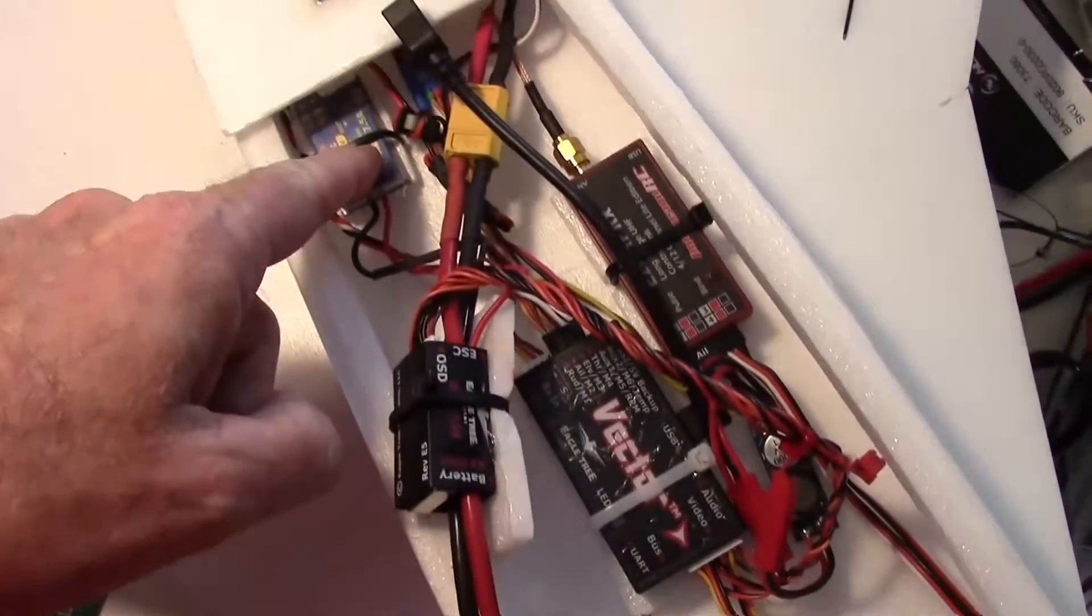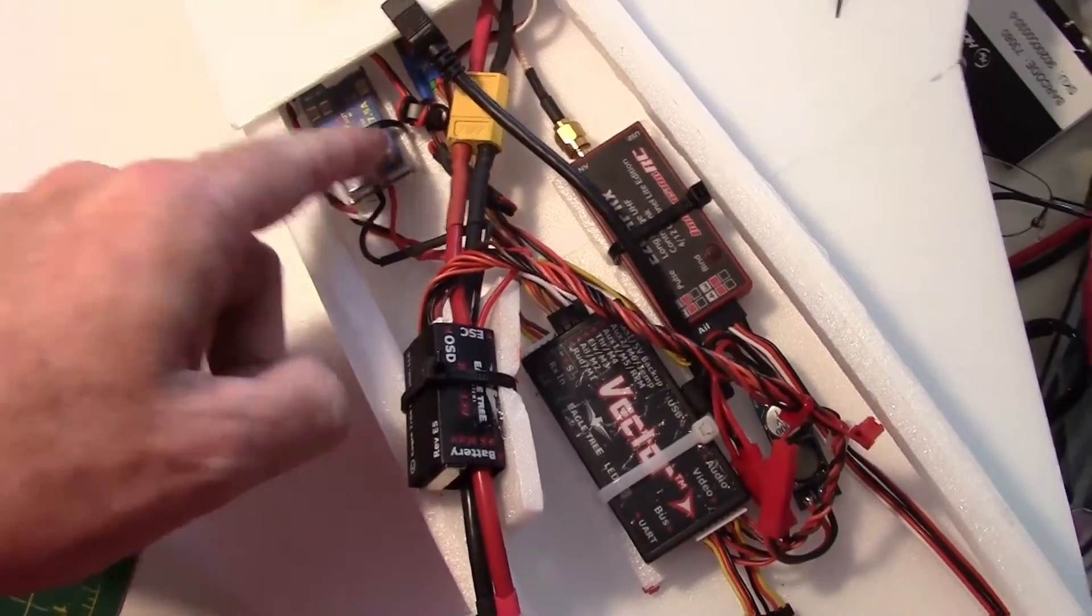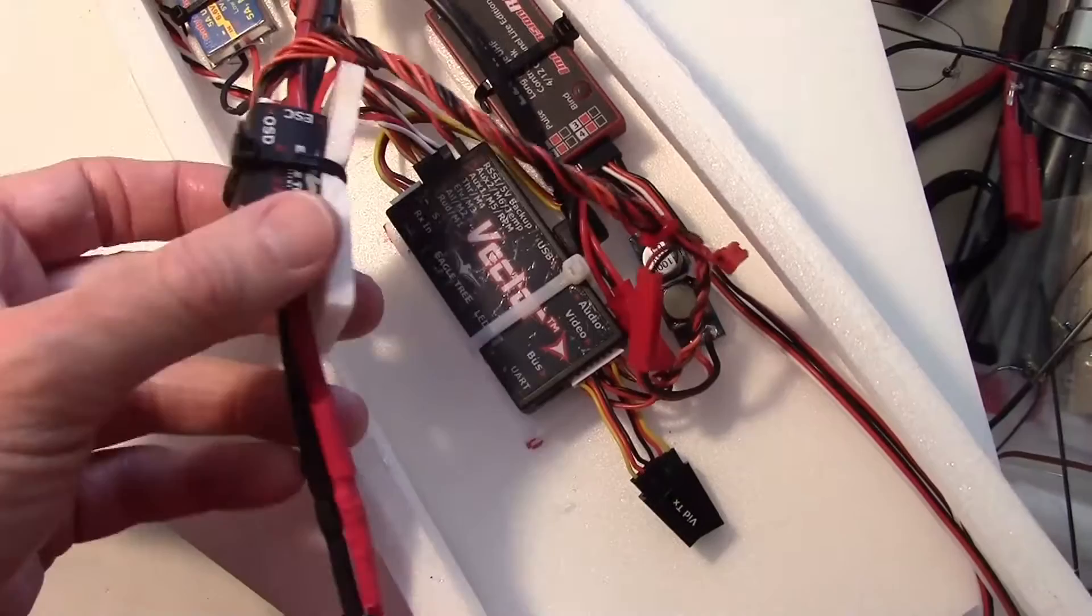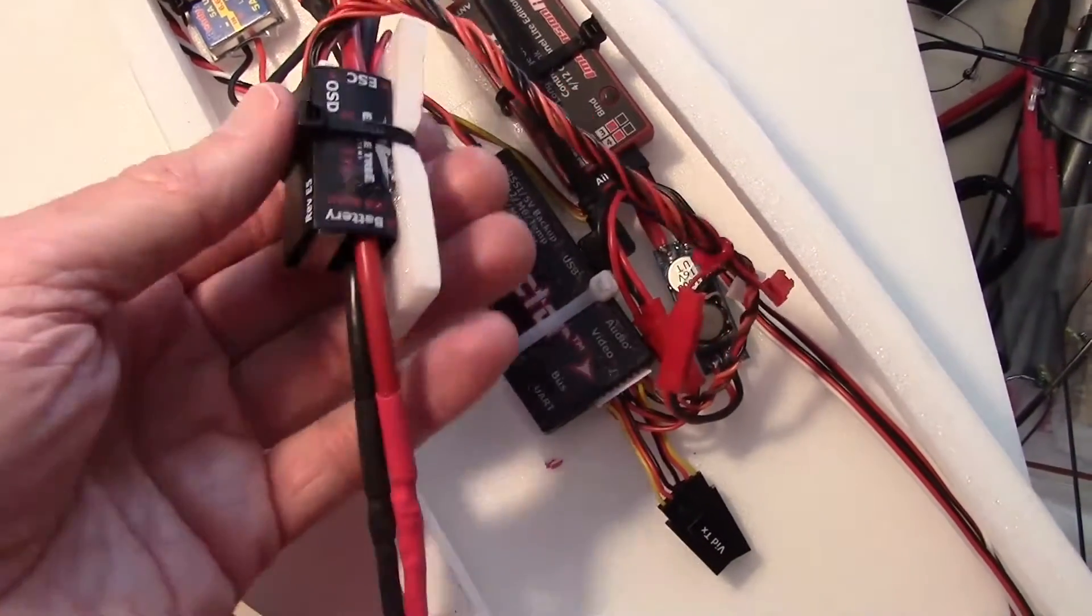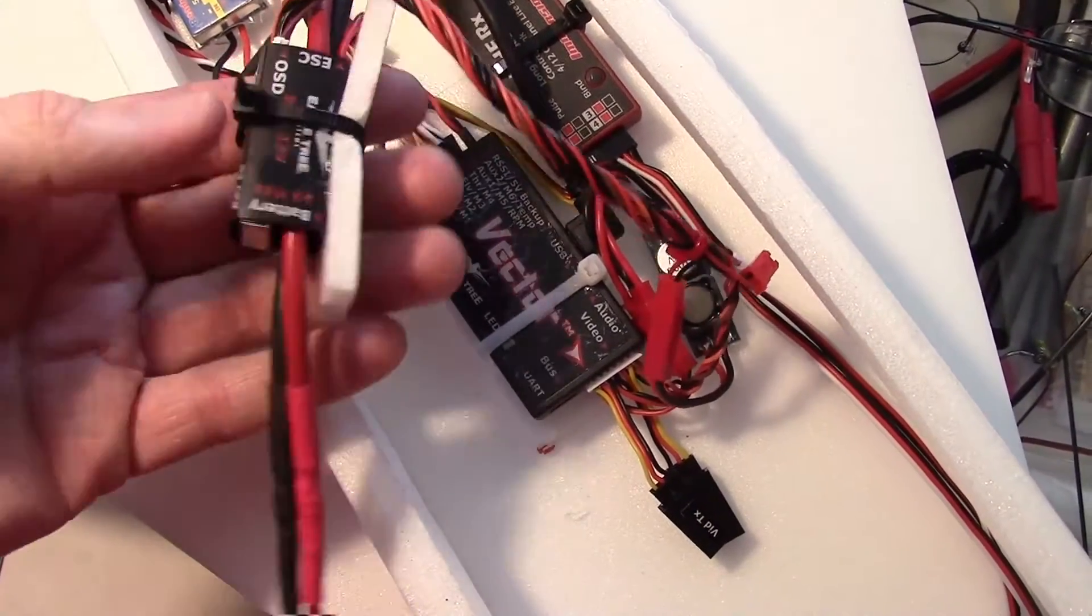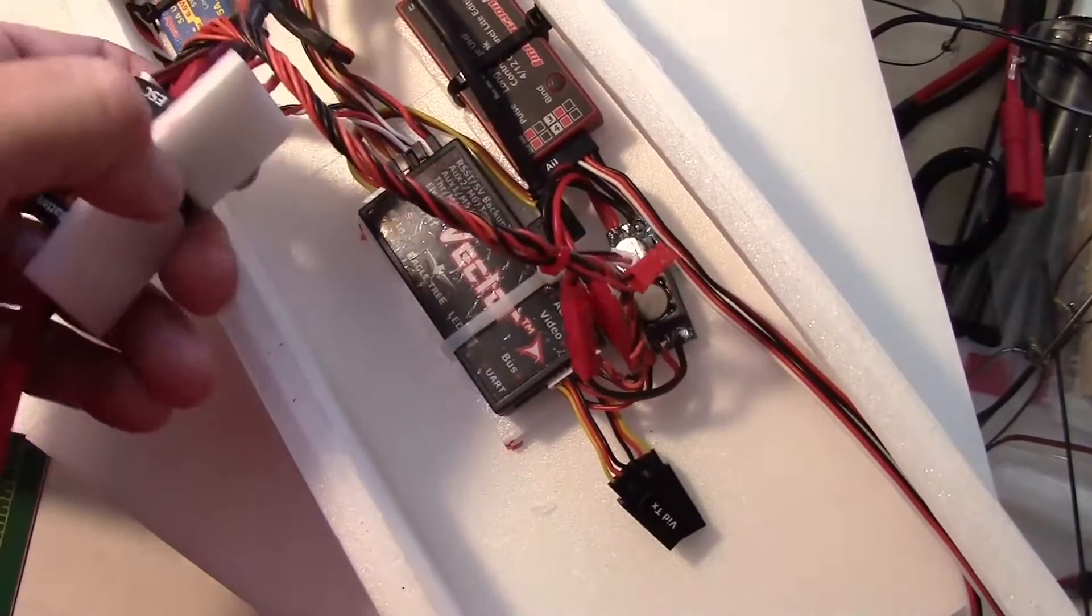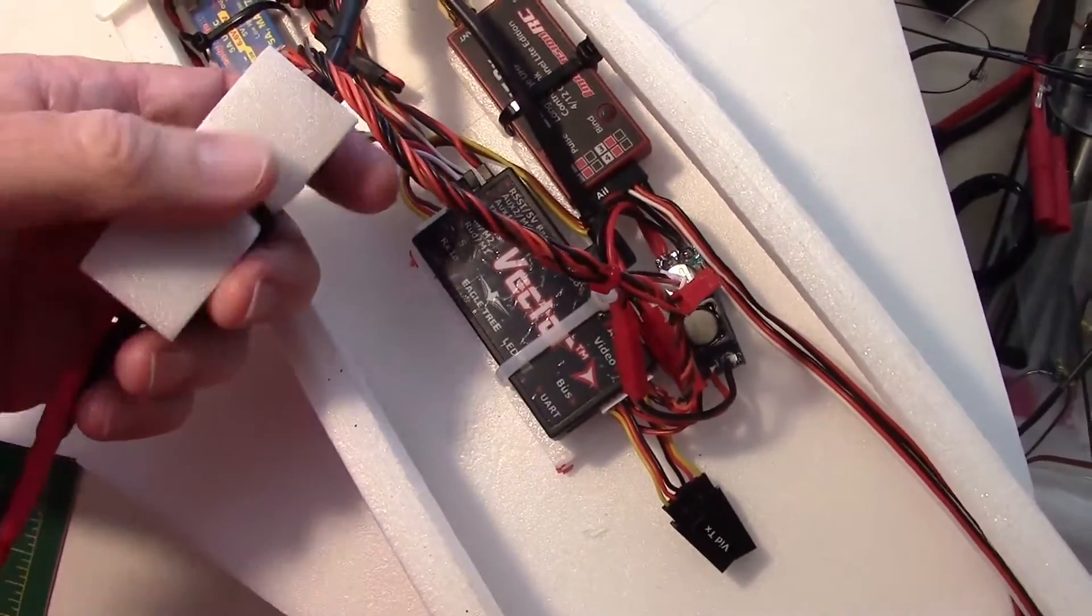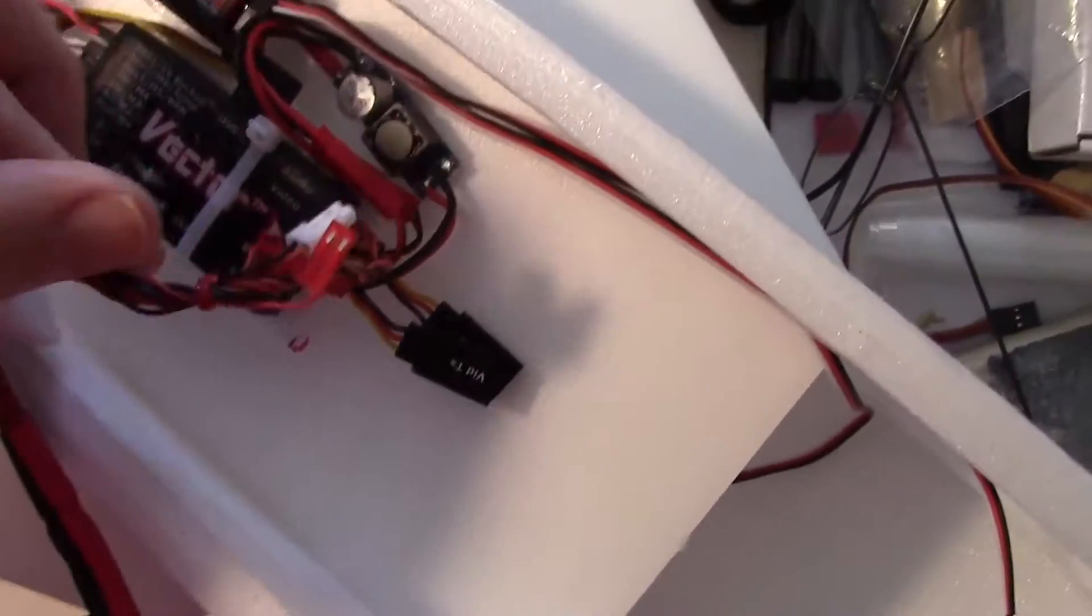So I mounted the U-BEC back in here, and I did it the same way I did the Vector and the EZUHF receiver. I put a piece of foam, tie wrapped a piece of foam to it like this. There's a little bit of glue on there too, just to glue it to the foam. And then I'm going to put more of the glue, probably going to use foam tack on the bottom of this and just glue it down. That'll take care of that.